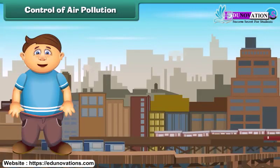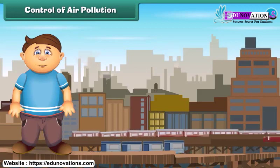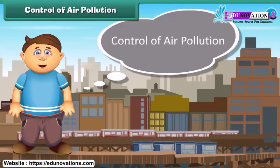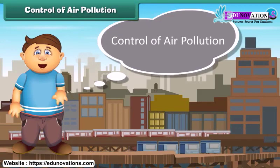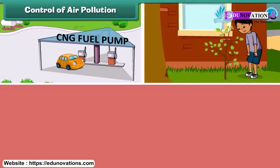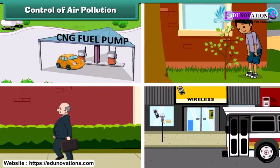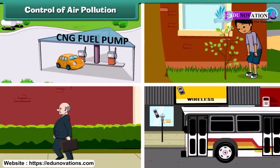Now the question is: how can we control air pollution? It can be controlled by using clean fuels like CNG in vehicles and industries, planting new young plants, preferring walking over driving, and using public transport for transportation.